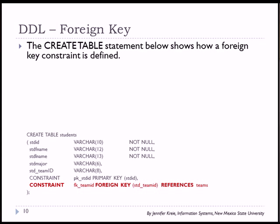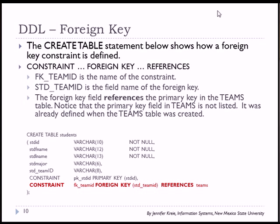Here is an example of another CREATE TABLE statement — this is for the Students table, and we have defined the foreign key. Shown in red, we have CONSTRAINT, the name of the constraint that we assign, and then the definition of FOREIGN KEY followed by the column that serves as the foreign key in this table. In this case it's std_team_ID, which is the corresponding field to Team ID in the Teams table. We see that with the REFERENCES TEAMS clause.